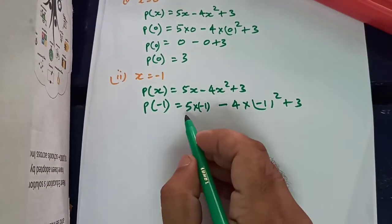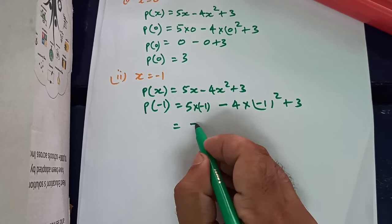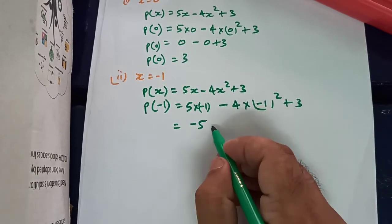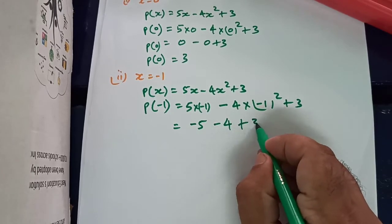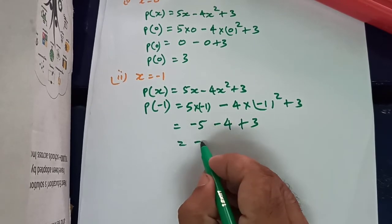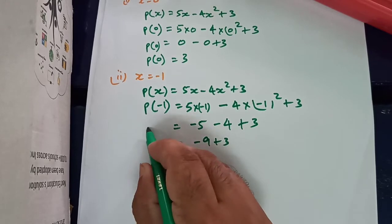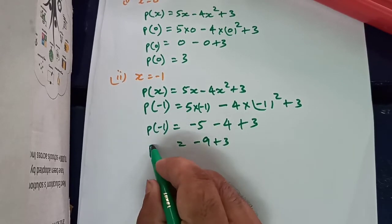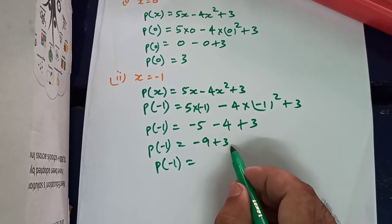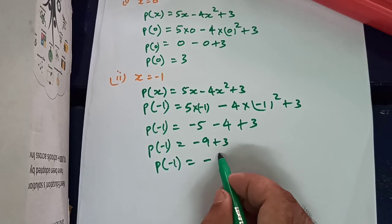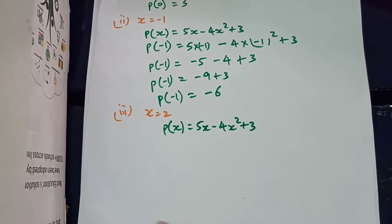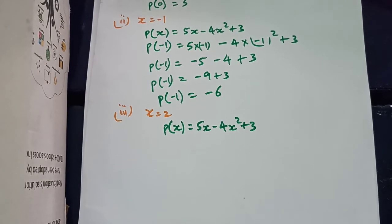Continuing: p(minus 1) equals 5 times minus 1, minus 4 times the square of minus 1, plus 3. So 5 times minus 1 is minus 5. Square of minus 1 is plus 1, and 1 times minus 4 is minus 4. So we get minus 5 minus 4 is minus 9, plus 3, so the value of the polynomial at x equals minus 1 is minus 6.